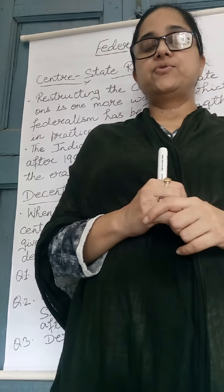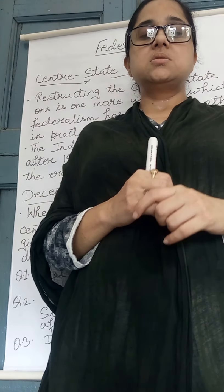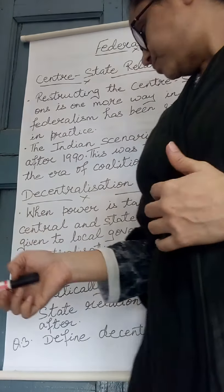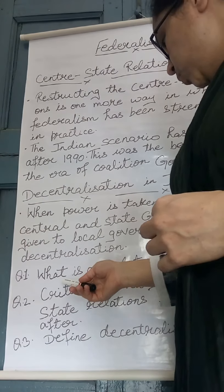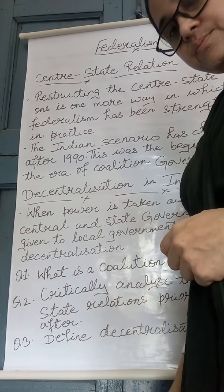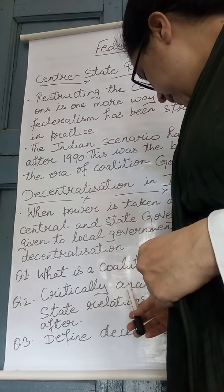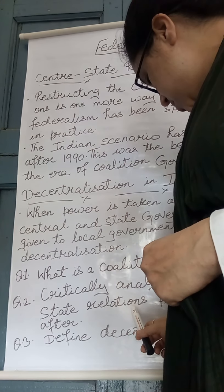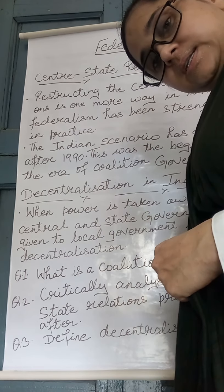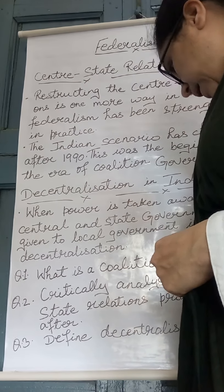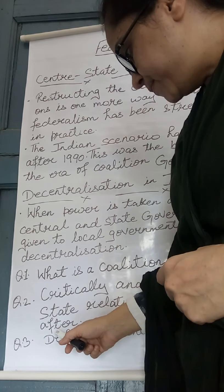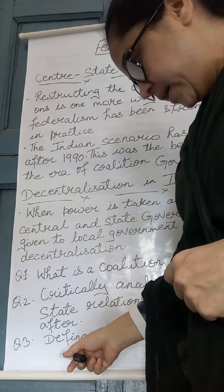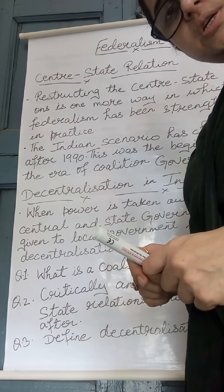Now you have to write the following question and answers in your fair copy: What is a coalition government? Practically analyze the center-state relations prior to 1990 and after. Define decentralization.